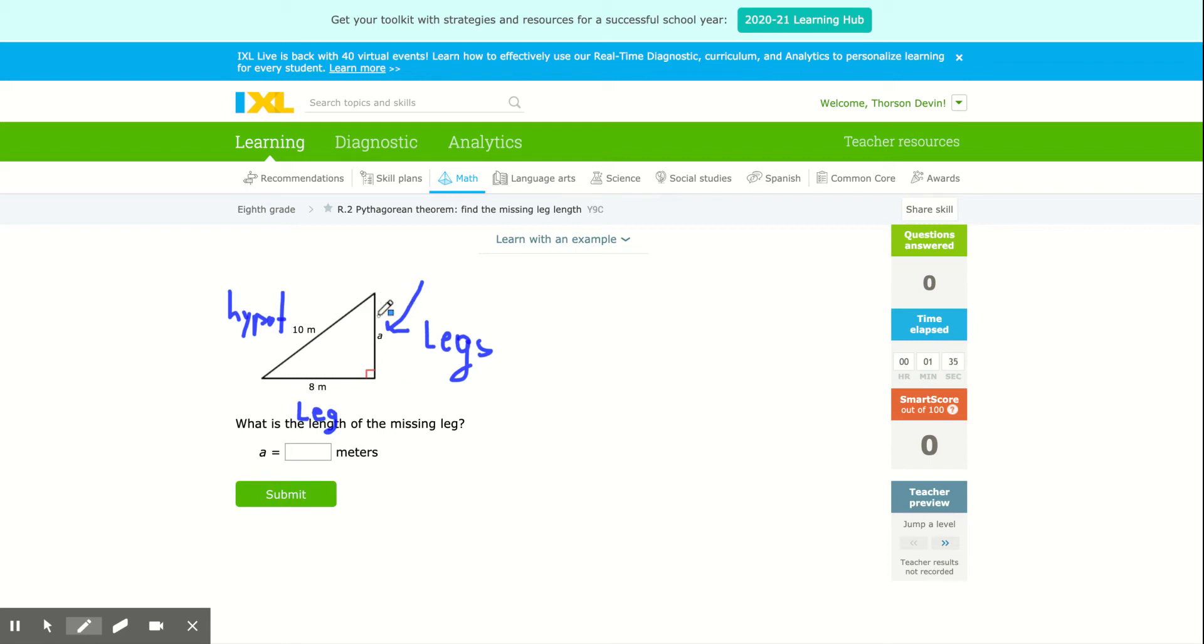Now again, remember, the whole concept is the relationship between the two legs. And if you square them and add them together, they'll add up to the length of the larger side squared.